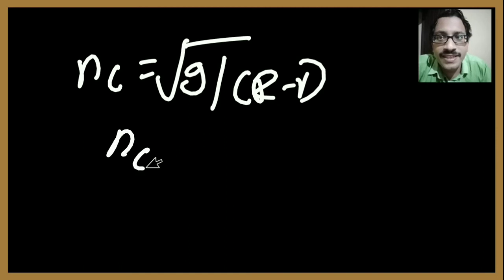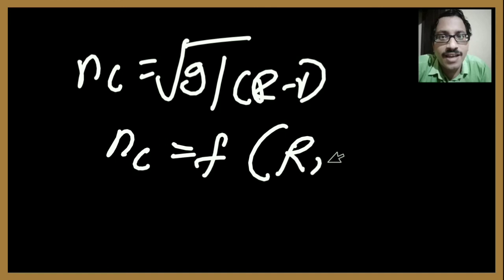Then Nc is a function of R and r. Capital R is the radius of the mill and small letter r is the radius of the ball.